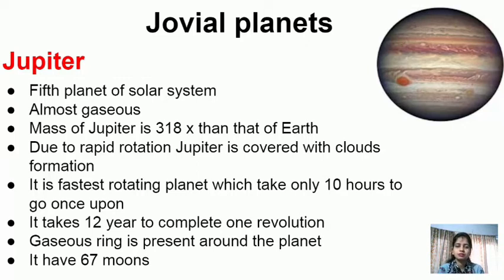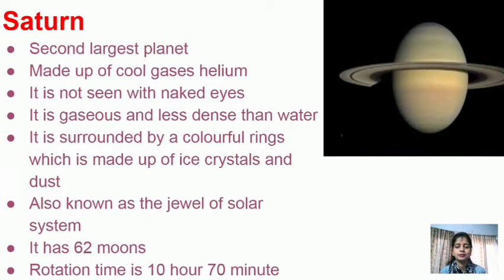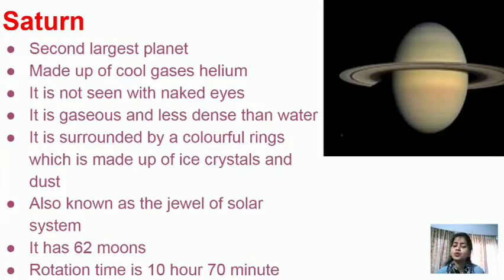Saturn is called the jewel of the solar system. It is the second largest planet, made up of cool gases like helium, and is less dense than water. It is surrounded by beautiful colored rings made up of ice crystals and dust. Rotation time is 10 hours 40 minutes and revolution time is 29.5 years. Saturn has 69 moons.